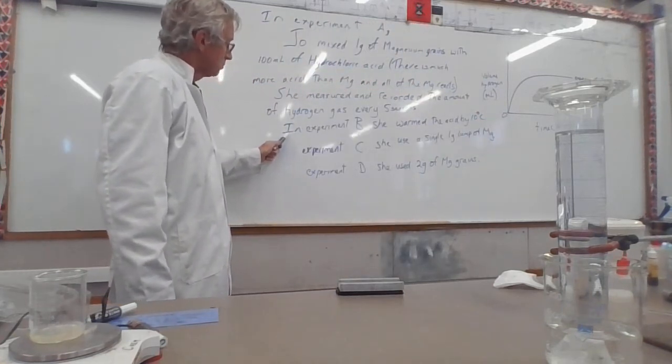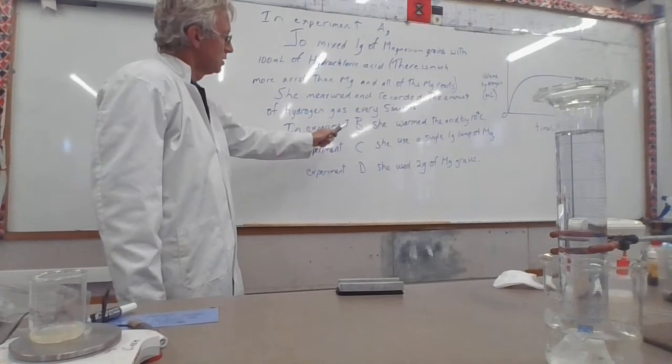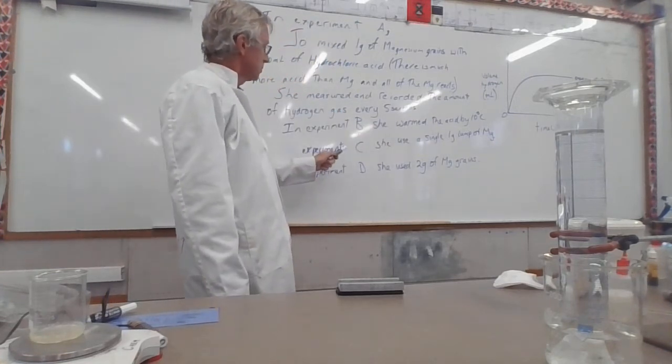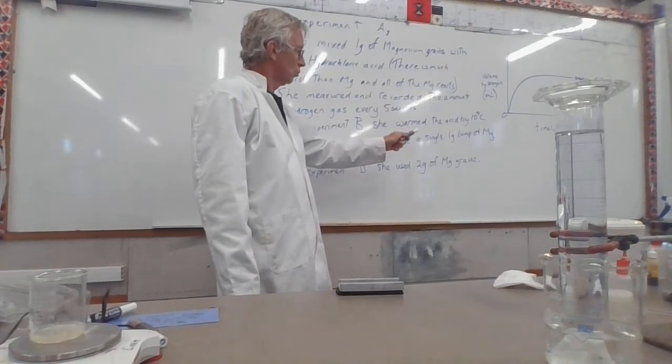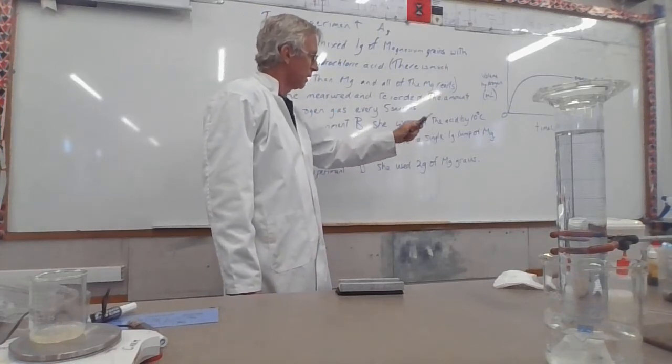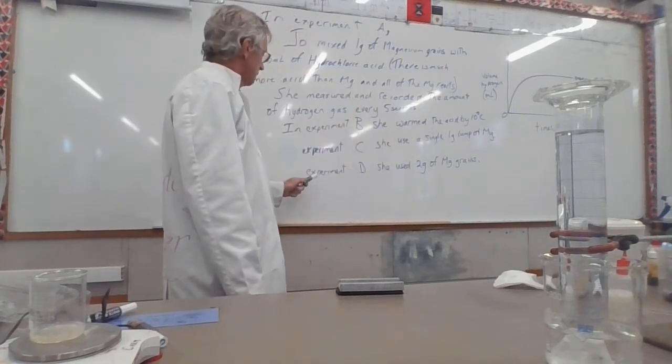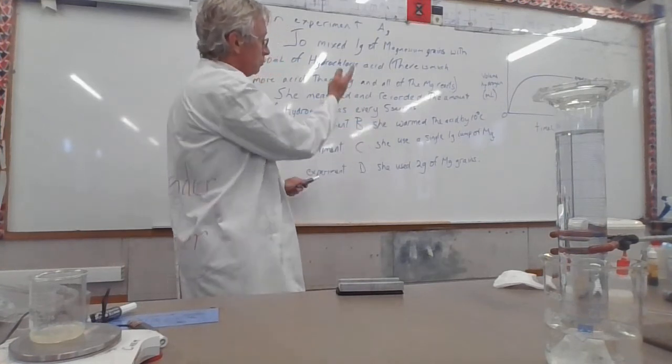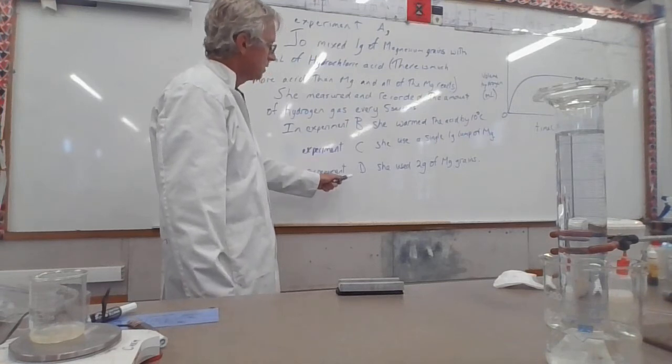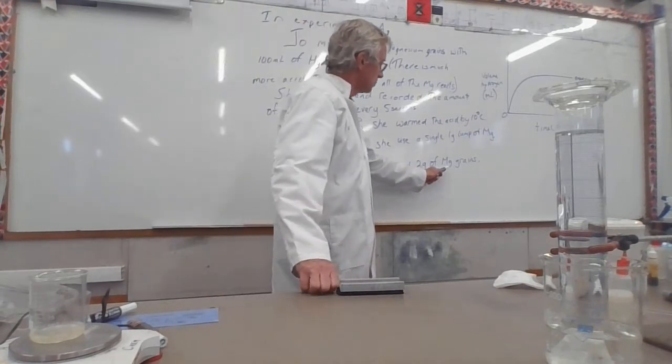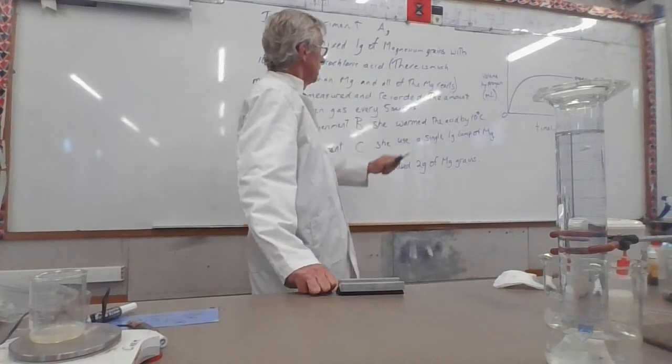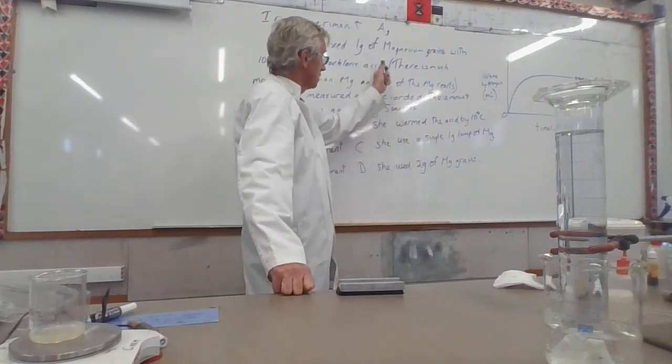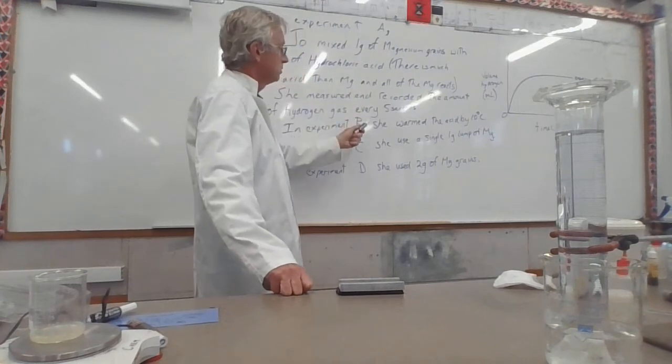Then she repeated the experiment. In Experiment B, she warmed the acid by 10 degrees. Experiment C, she used a single 1 gram lump of magnesium instead of grains. Now you're not told instead - you have to read this very carefully and compare them to the old experiment. In Experiment D, she used 2 grams of magnesium grains instead of 1 gram. Now you're not told it's instead of 1 gram, you have to spot these differences.